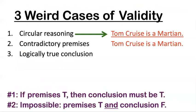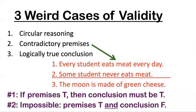Let's look at some illustrations. Remember the Tom Cruise argument: 'Tom Cruise is a Martian; therefore, Tom Cruise is a Martian.' This might seem bizarre, but circular reasoning is one of these weird cases of validity — because if that premise is true, so is the conclusion. How about contradictory premises? That's either where you have two separate premises that can't simultaneously be true, or one sentence which is itself a logical contradiction. For example: 'Every student eats meat every day' and 'Some student never eats meat' — those can't both be true. So the premises can never all be true together.